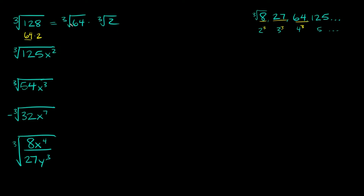64 is a perfect cube — it's equal to 4. So the cube root of 64 is equal to 4, and then the cube root of 2 we can't simplify anymore, so we would just multiply by the cube root of 2. Your final answer right here would be 4 cube root of 2.